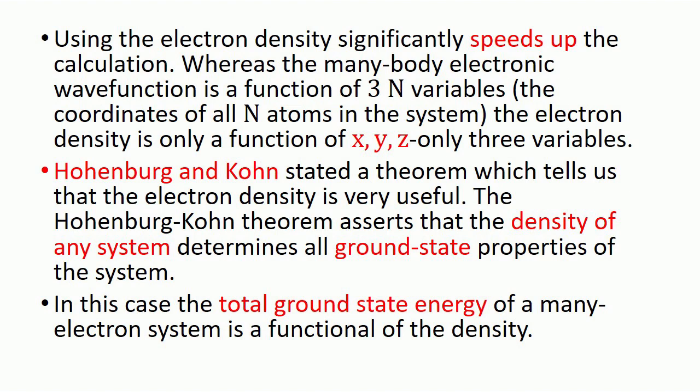In water (H₂O), oxygen has 8 electrons and the 2 hydrogen atoms have 2 electrons, giving 10 electrons overall. The 3N condition gives 3 multiplied by 10, which equals 30 variables — a big number that takes a lot of time to compute. In DFT, we use the electronic distribution: instead of treating the 10 electrons separately, we just consider a single electron density.